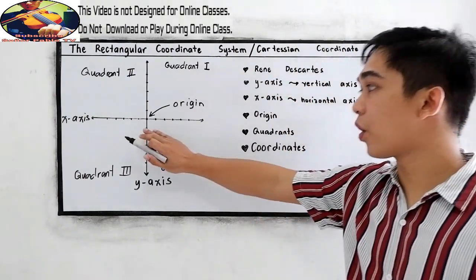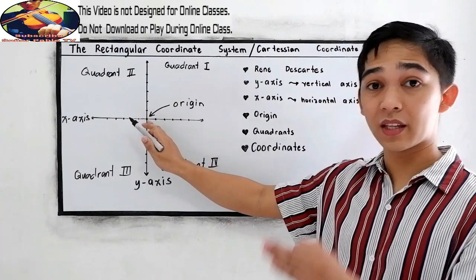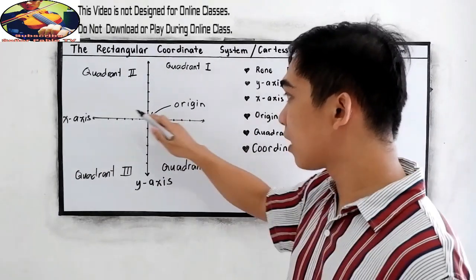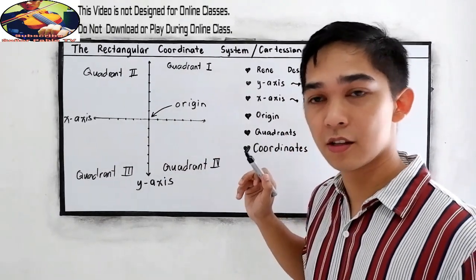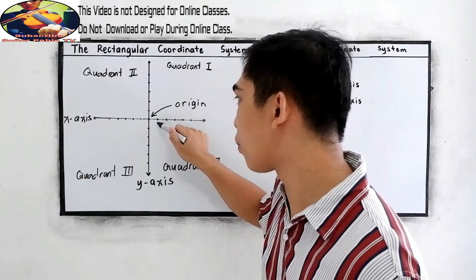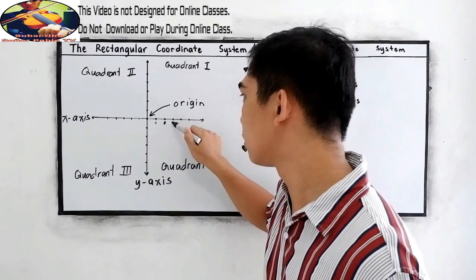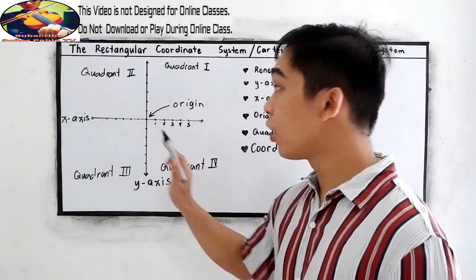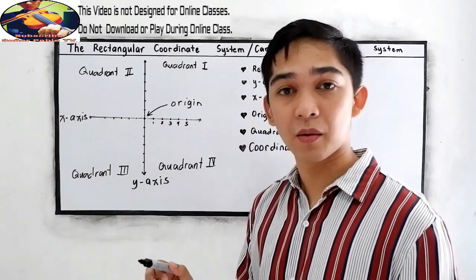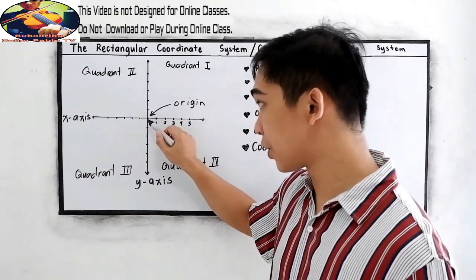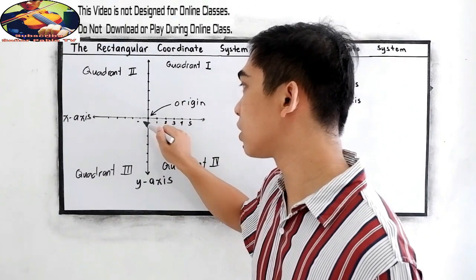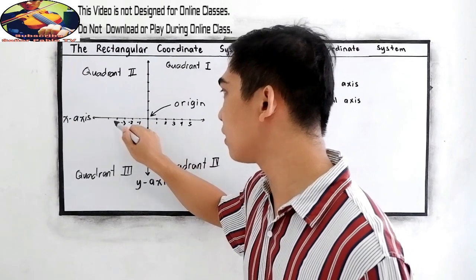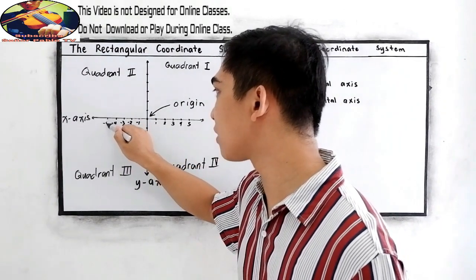Now, in our origin, we know that on our number line, if this is our zero, on the right side are the positive numbers. So let us label it: one, two, three, four, and five. On the left side will be our negative numbers: negative one, negative two, negative three, negative four, and negative five.